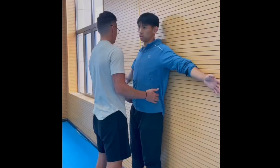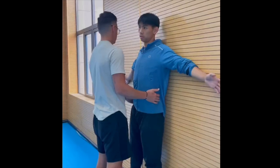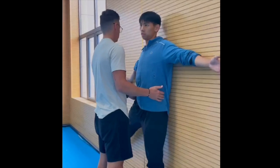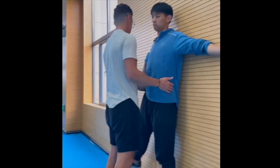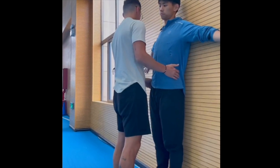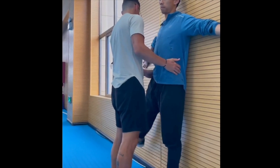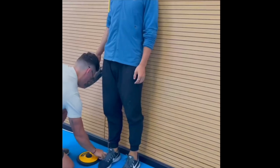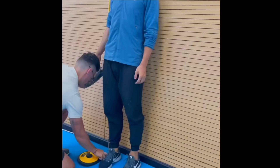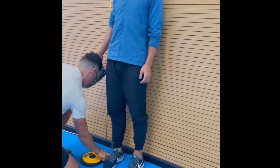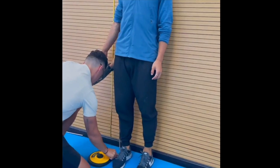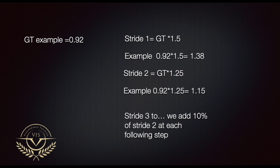To measure the GT length, ask the athlete to stand back against a wall and perform an abduction movement of the leg to be measured. This makes the greater trochanter easy to locate. Then measure from the GT point to the ground. The shoes should be off during this measurement. Make sure you follow a line parallel to the leg — do not follow a perpendicular line to the floor.